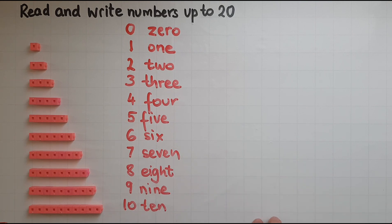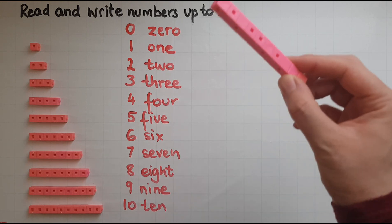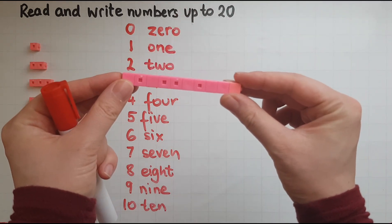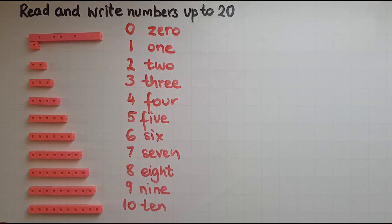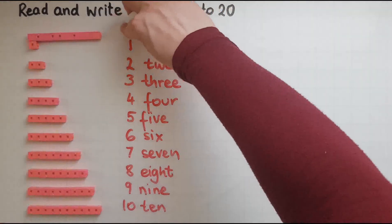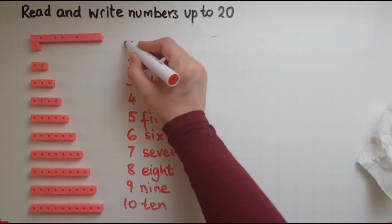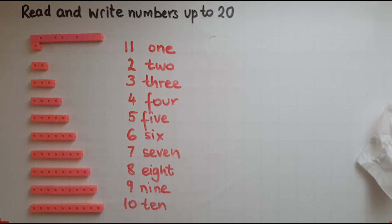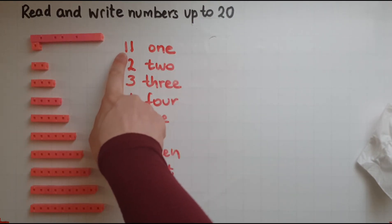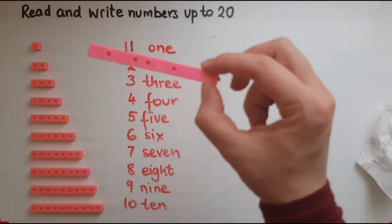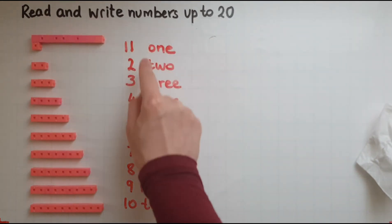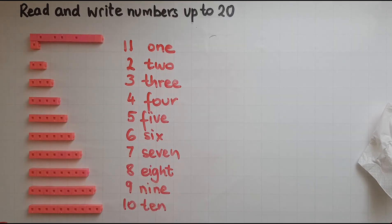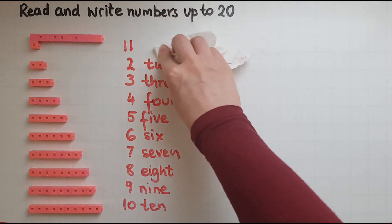What we'll look at now is numbers that are bigger than ten. So in this block there are ten cubes. If I add ten to the one then I have eleven. That one on the left represents the block of ten, so there is one block of ten and one single cube. That number is read as eleven.